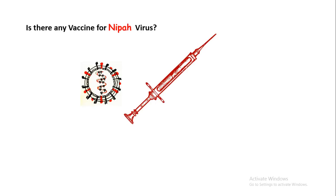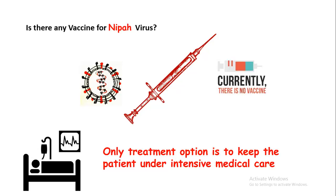Is there any vaccine for Nipah virus? No, currently there is no vaccine. The only treatment option right now is to keep the patient under intensive medical care, through which the body itself can fight back the virus — with a rare chance the patient could recover. Scientists around the world are trying to develop antibodies against the proteins the virus uses to enter cells, but those vaccines and therapies are still in the clinical trial stage and not available on the market. Intensive medical care remains the only option.